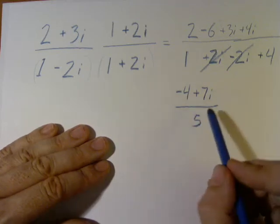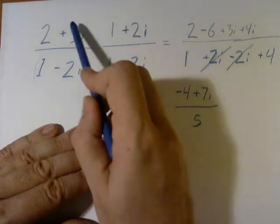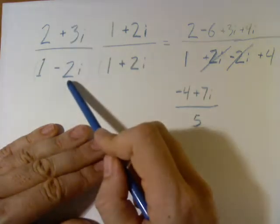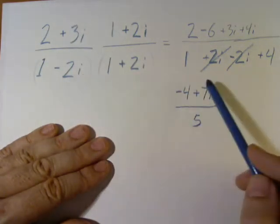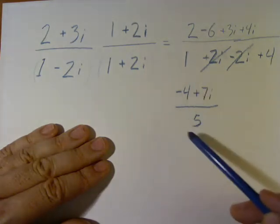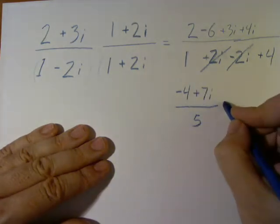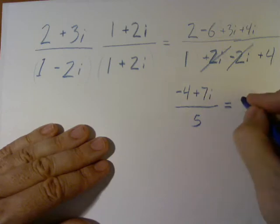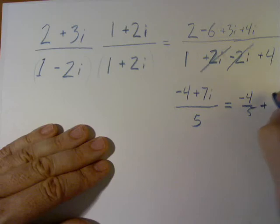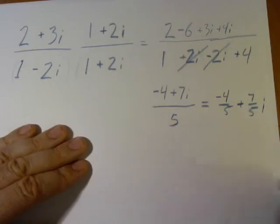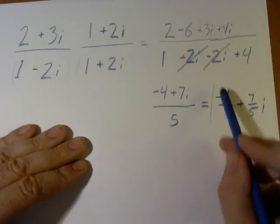In other words, our fraction, we had a complex fraction, a complex number over a complex number, now we just have a complex number divided by a real. We can say this is minus 4 over 5 plus 7 over 5i. This is our answer.